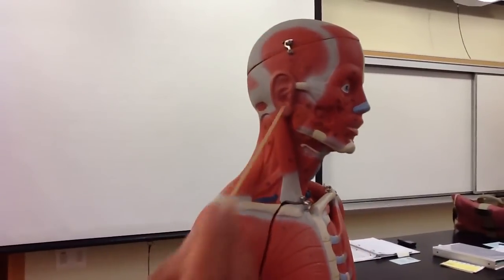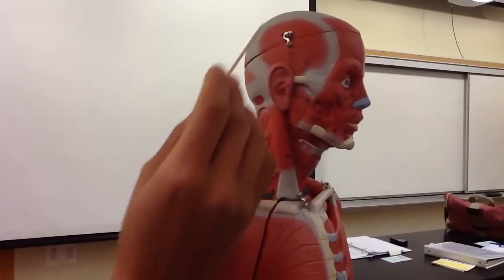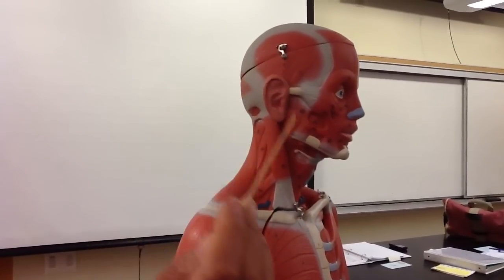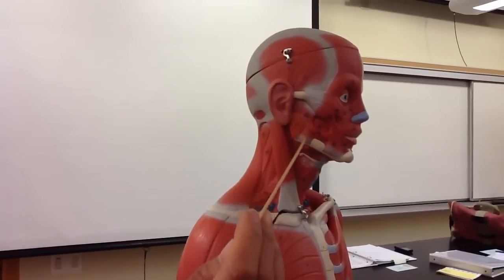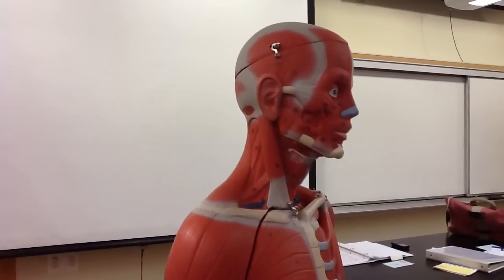On the side we have the temporalis. This is a muscle of mastication. The masseter is also a muscle of mastication.